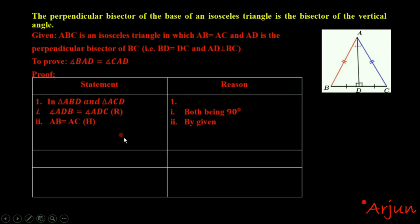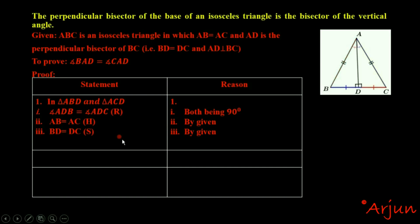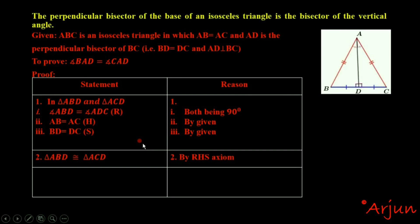AB and AC are the hypotenuse, so that is by given. And third point: BD is equals to DC. BD and DC are equal — by given, since AD is the perpendicular bisector. So by RHS congruence, we can write triangle ABD is congruent with triangle ACD by RHS.